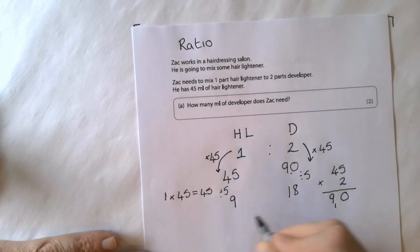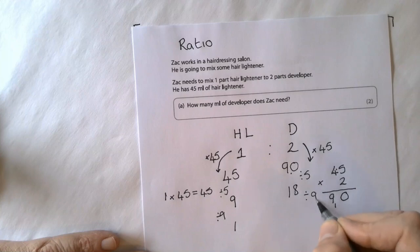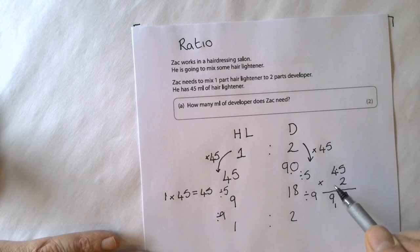And then what number goes into both 9 and 18? Well, 9 goes into both. So if I divide 9 by 9, I get the answer 1. And 18 divided by 9 gives me the answer 2. So that's your check to make sure I've done it correctly.